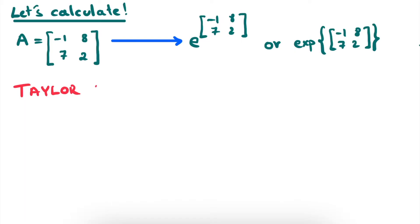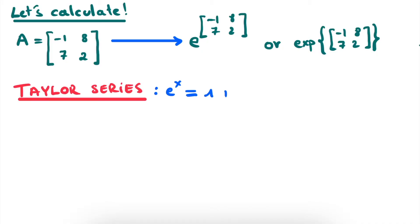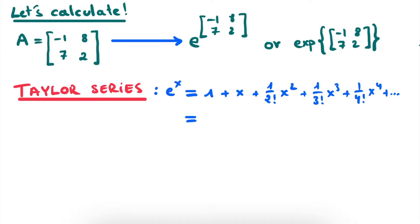The only piece of information you need in order to calculate this is that you have to take the Taylor series of the e power. The idea behind the Taylor series is to write the function — in this case e to the power of x — as a sum of powers of x. So we have 1 plus x plus 1 over 2 factorial x squared plus 1 over 3 factorial x to the power of 3 plus 1 over 4 factorial x to the power of 4, and so on. We can write this in a more compact form using the sigma notation: we sum over the index k with x to the power of k in the numerator and k factorial in the denominator.